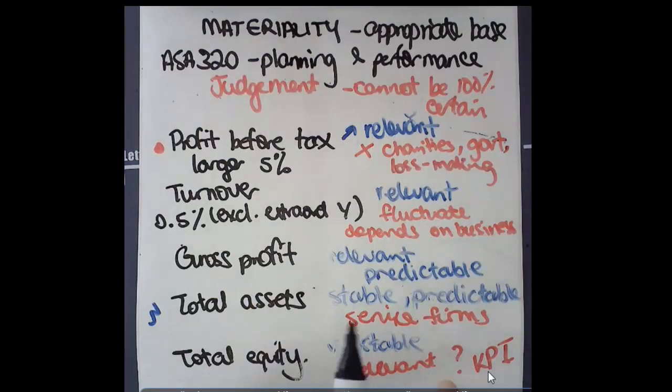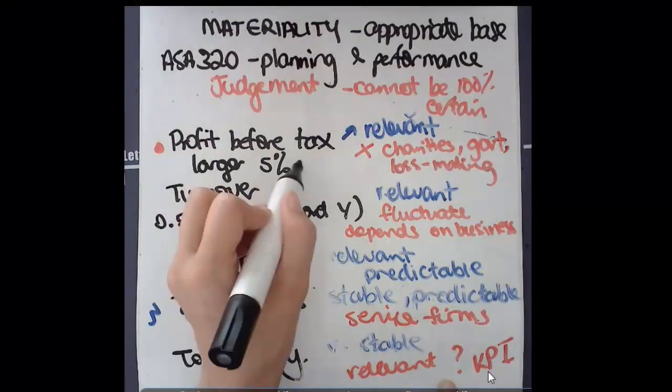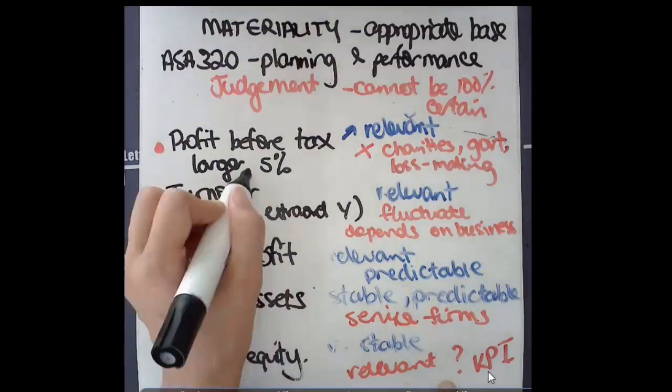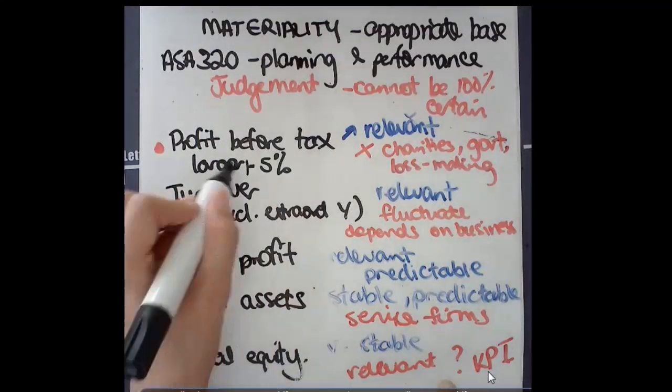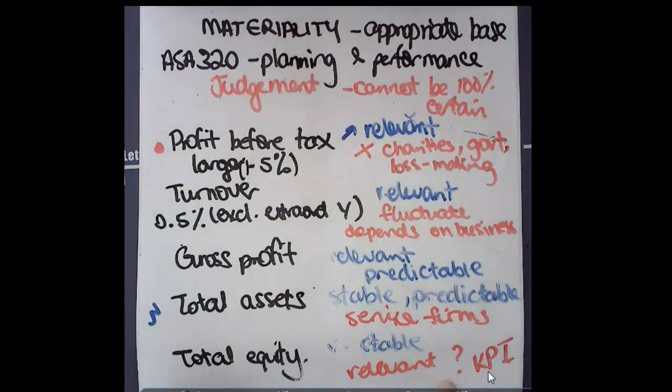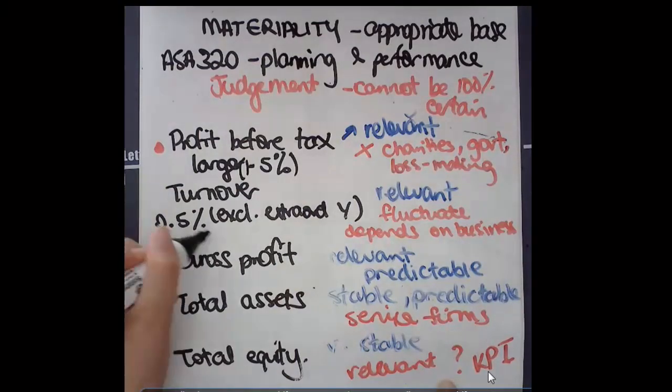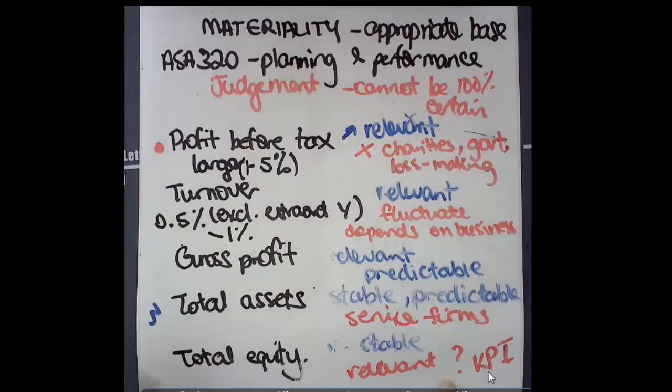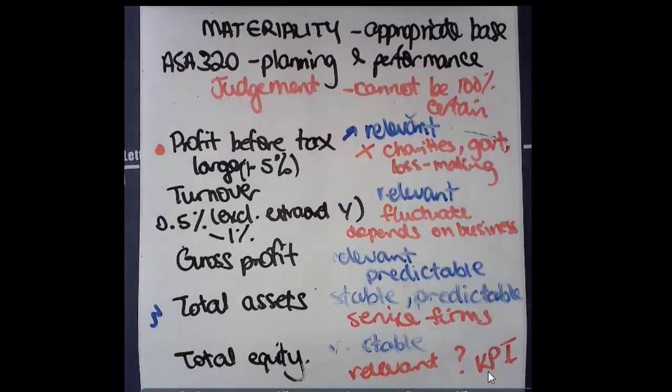Most audit firms will have some sort of guidelines. So they might say you might use 1% to 5% for profit before tax. Turnover might be 0.5% to 1%, depending on whether your client risk is low or high, which is what I want to talk about next.